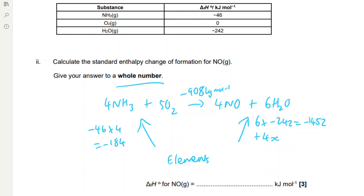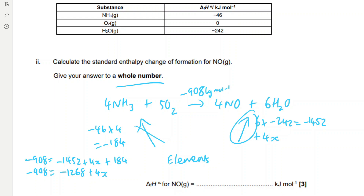Note the direction of the arrows: for the enthalpy change at the top of the cycle we go with the arrow on the right and against the arrow on the left, so we change the sign on the left-hand arrow to positive. We can write the equation as: minus 908 = minus 1452 + 4x + 184. Combining minus 1452 and 184 gives minus 1268, so minus 908 = minus 1268 + 4x. Adding 1268 to both sides gives 360 = 4x, and dividing by 4 gives x = 90. So the enthalpy change of formation of NO is 90 kJ/mol.